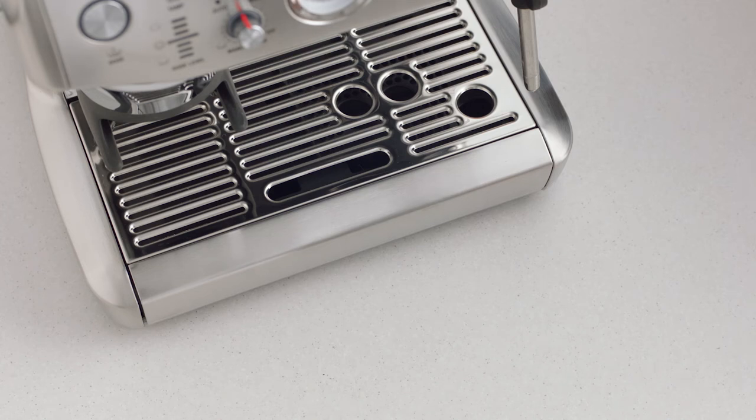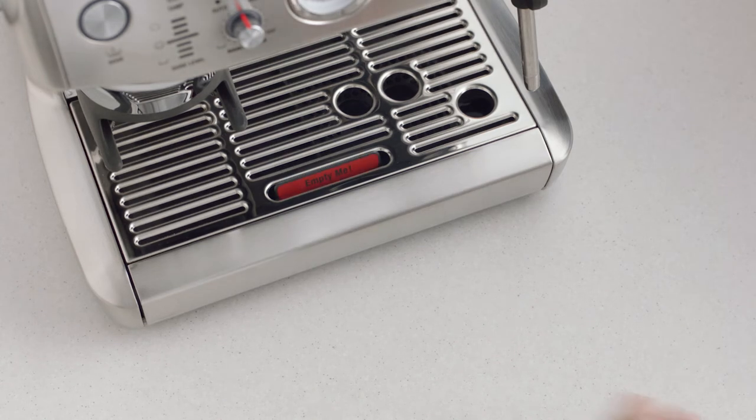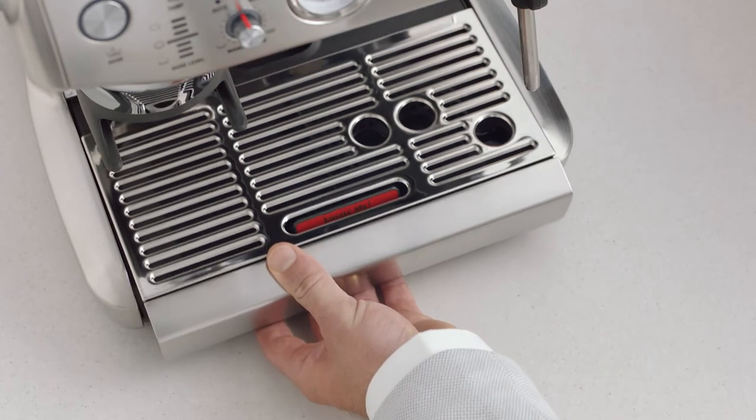The drip tray should be removed, emptied, and cleaned periodically with warm water, particularly when the Empty Me indicator shows.